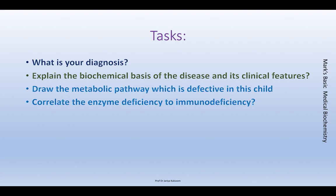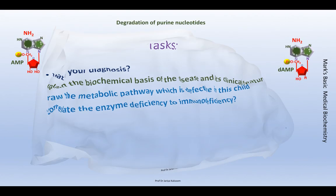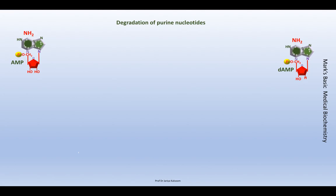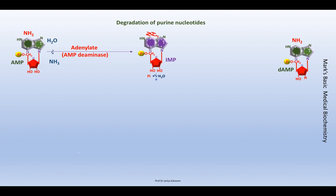The metabolic pathway which is defective is the purine degradation pathway. The purines involved are adenosine monophosphate and deoxyadenosine monophosphate. For their degradation, the amide group is removed by deaminase and AMP is converted to IMP. Further degradation occurs after removal of the phosphate groups in the presence of nucleotidases. IMP is converted to its nucleoside form inosine, and AMP to adenosine.